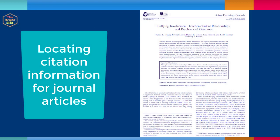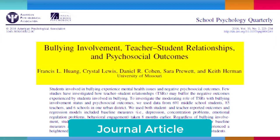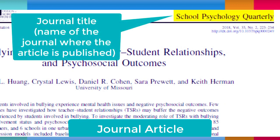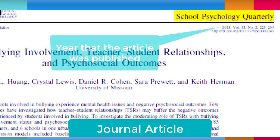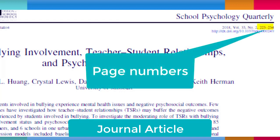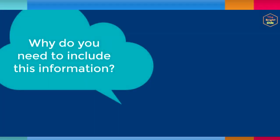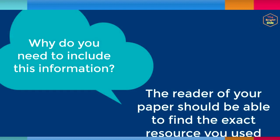First, let's identify where you will find the information needed for your citations. You'll need the title of the article and the authors. Other information is typically at the top or bottom of the article. You'll see the journal title — the name of the journal where the article is published — the year of publication, and the volume and issue numbers, which show exactly when the article was published. The volume always comes before the issue number, and sometimes there is no issue number. You'll also need to include the page numbers and the DOI if your article has one. DOI stands for Digital Object Identifier, and it's a unique identifier specific to each article. These details are needed in your reference list citations so the reader can locate the exact resource you used.